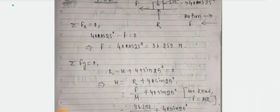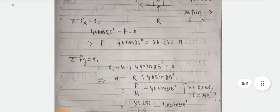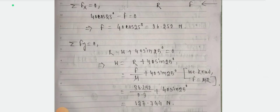For summation of Fy equals to 0: R minus W plus 40sin25° equals to 0. Therefore W equals R plus 40sin25°. Since R equals mu times the normal reaction, and substituting all values, the total weight W is equal to 137.744 N.